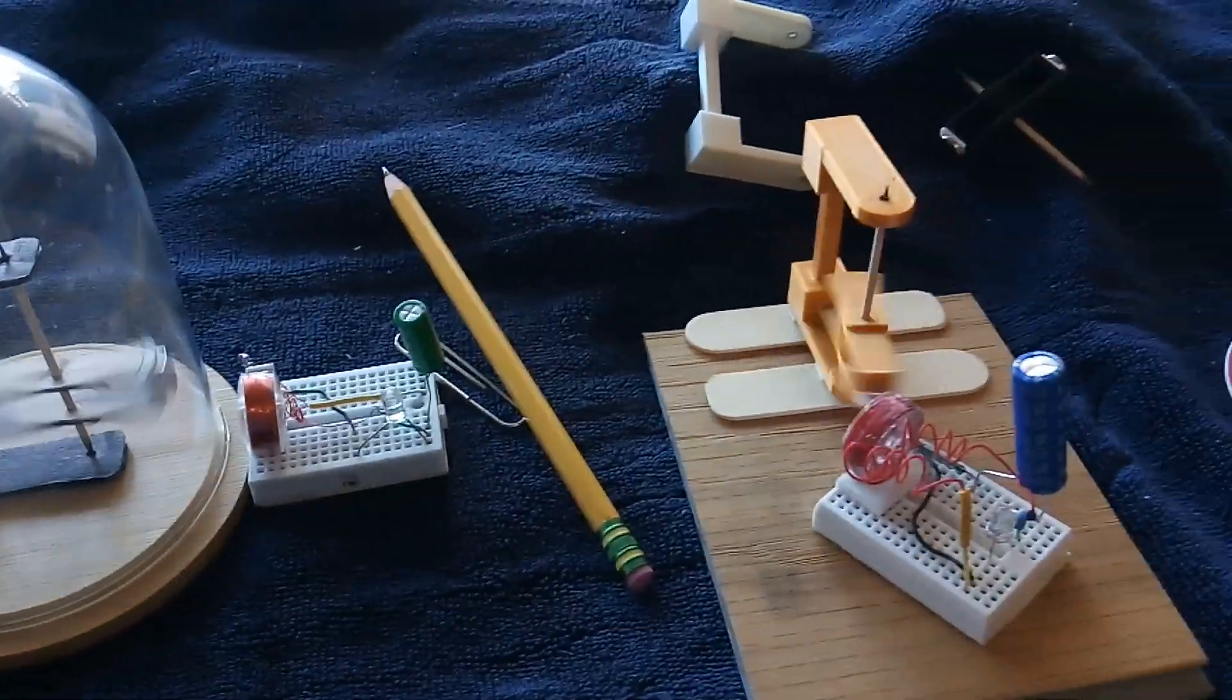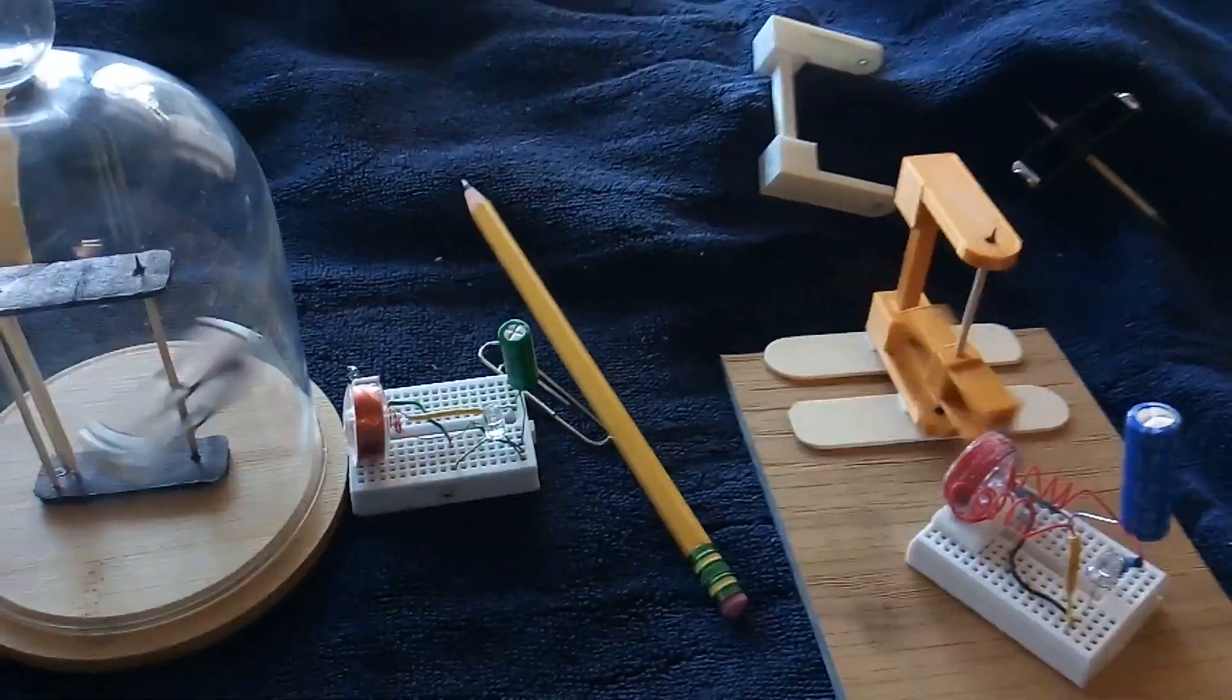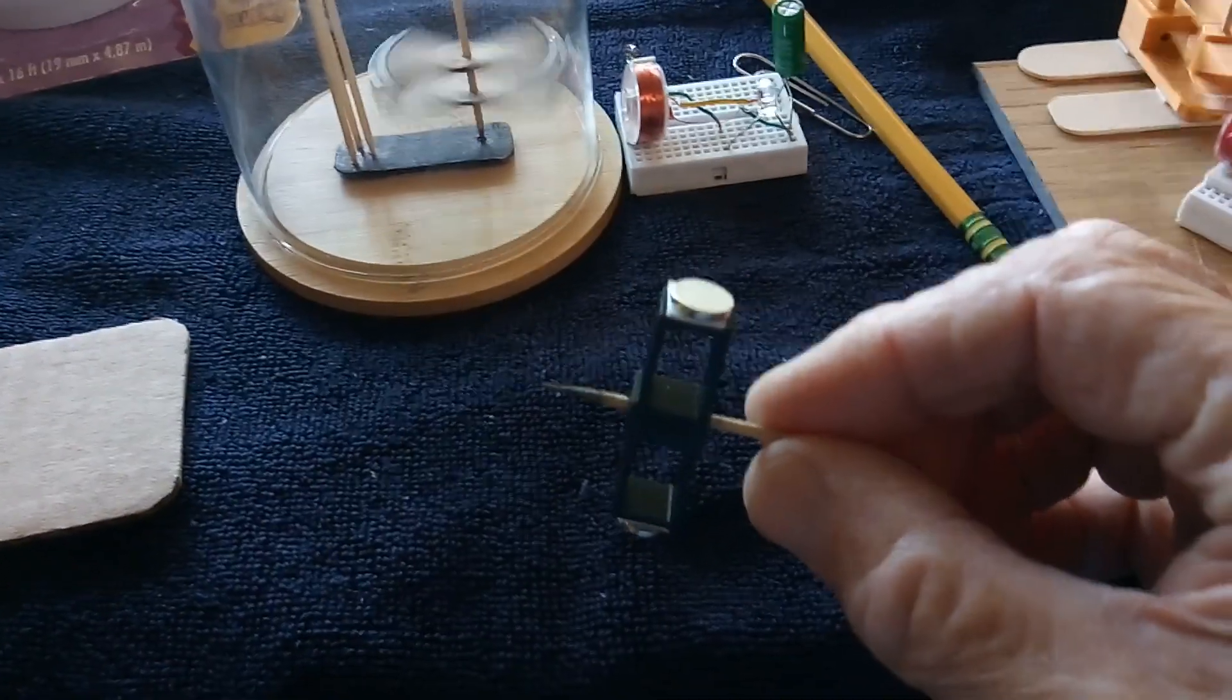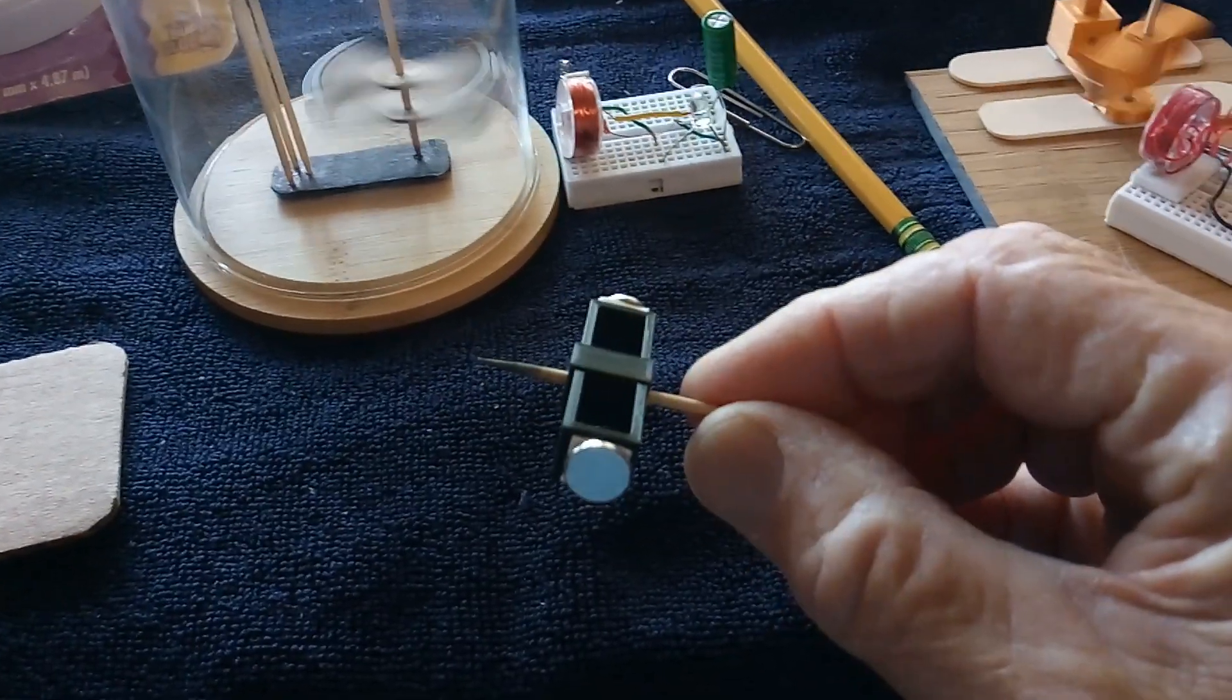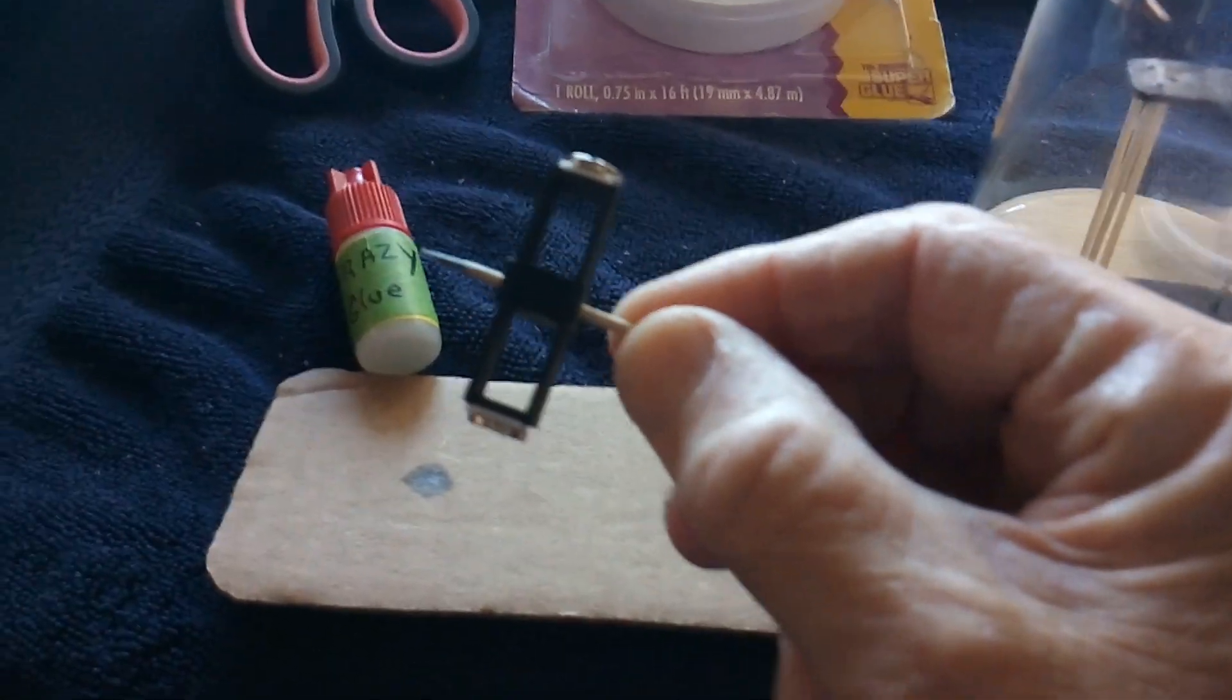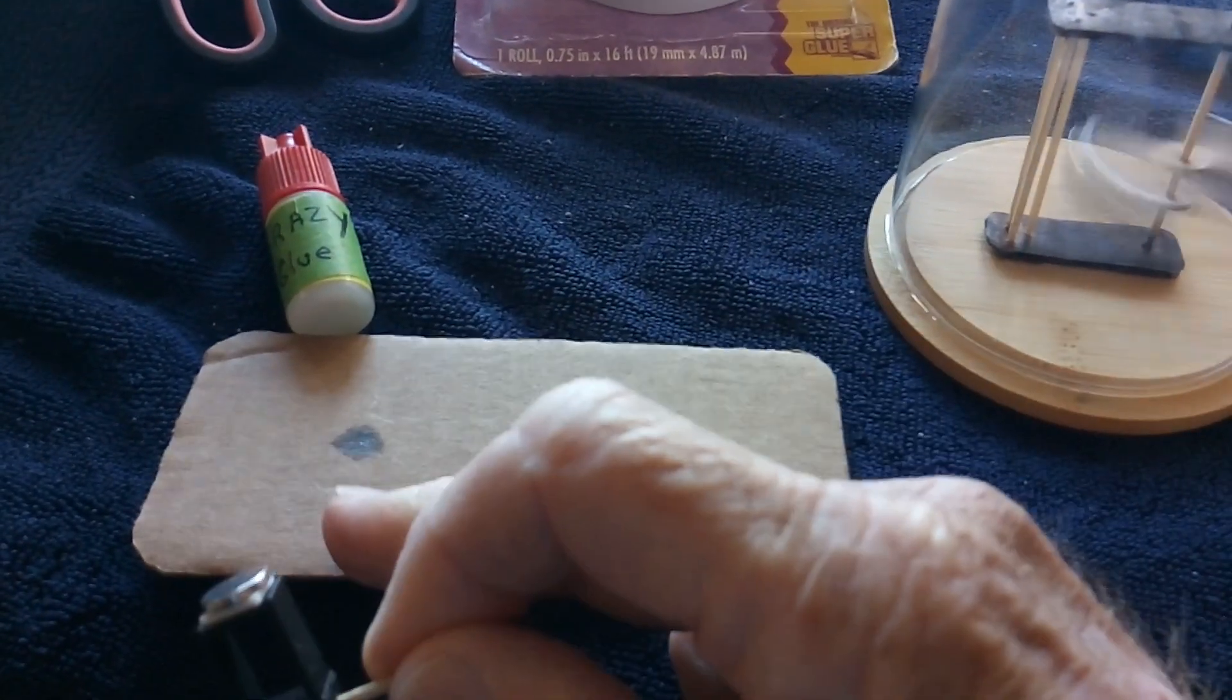That's what I've been working on—these little, very simple two-magnet monopole motors using a toothpick as the shaft and also the bearing surface. Like I say, the crazy glue with the graphite.